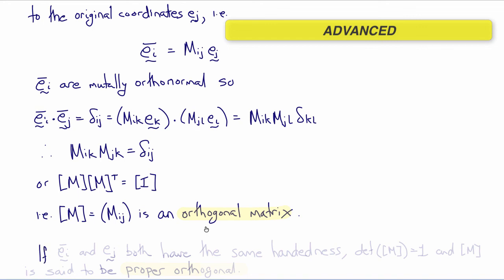Now, this is true, provided that ei bar and ej both have the same handedness. In that case, the determinant of m will be positive 1, and then m is said to be proper orthogonal. If the handedness switched, then the determinant would be minus 1, and it would no longer be a proper orthogonal matrix.